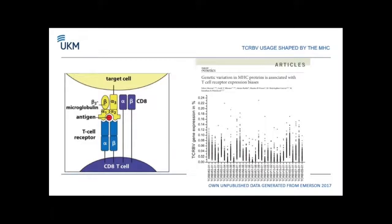In the first part of my talk I want to discuss how the HLA shapes the TCR repertoire. We've heard a lot about antibodies — I want to talk about T-cell receptors. You all know that the HLA presents the antigen and the T-cell has a T-cell receptor, and depending on which HLA background you have, your T-cell receptor repertoire will be shaped immensely. There are very nice papers in high-ranking journals that have looked at this, and we could see the same thing in our data.